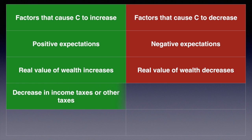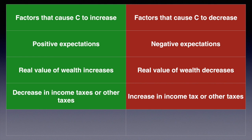If the government reduces income or sales taxes, it will either result in people having greater disposable income or paying lower prices for goods and services. As a result, aggregate demand will increase. Conversely, an increase in personal income tax or sales taxes will reduce disposable income or increase the sale price of goods and services.